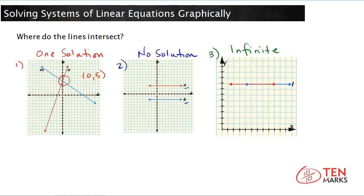It has infinite solutions because both lines share every single point since they are the same line. So these are the three different outcomes you can have with a system of linear equations: they either intersect at one point, they never intersect because they're parallel, or they intersect at every point because they are the same line.